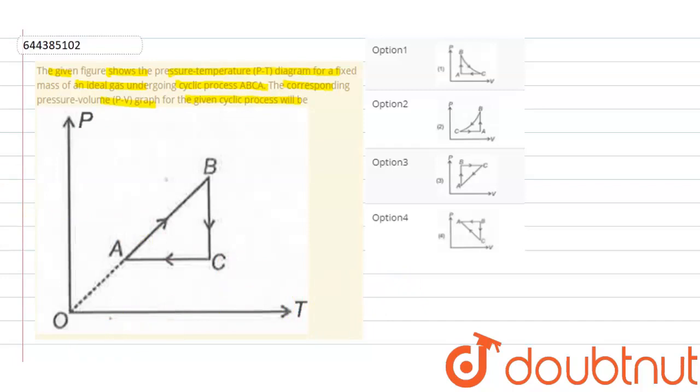So let us draw the PV graph, the corresponding PV graph. Here we draw the x-axis and the y-axis. Let's mark the axes: this axis is the pressure axis and this axis is volume.